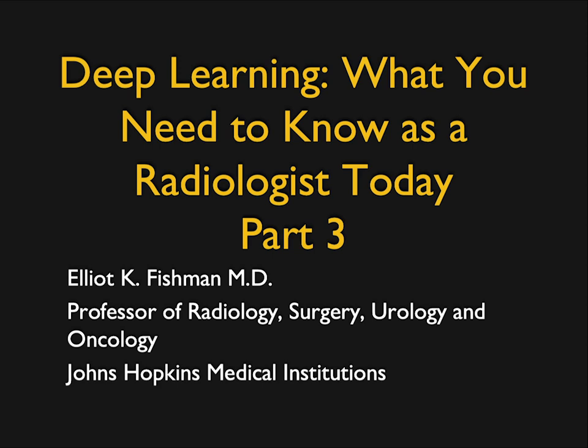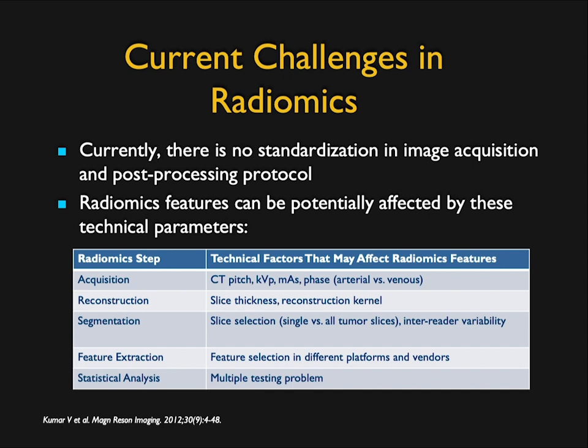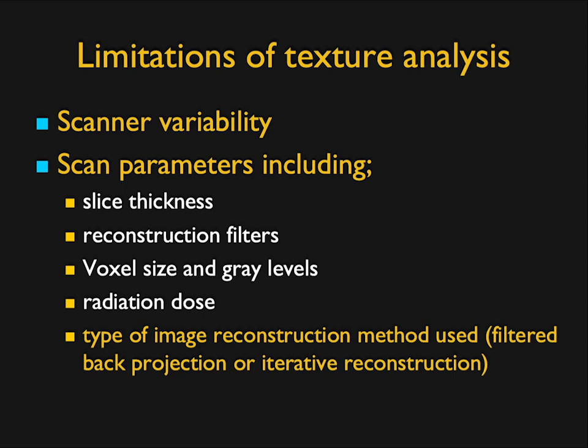Hi, this is Elliot Fishman, and welcome back to part three of three on deep learning, what you need to know. The problem with radiomics is multiple. It has tremendous potential, but the variability — there's no standard acquisition protocols, no injection protocols. It needs to work on every scanner, even scans that aren't done with dual phase or injected well. Things like reconstruction algorithm, whether it's on a Siemens or a GE, thick slices or thin slices — all of these factors can make something work or not work. That's very challenging.